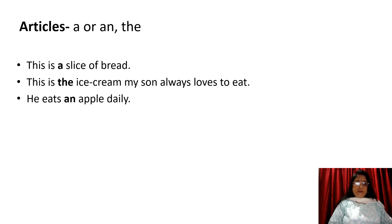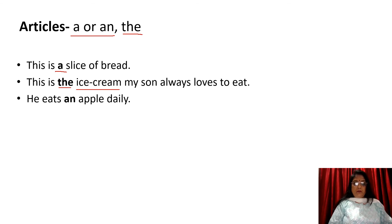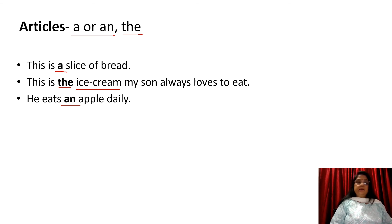Articles are also used as determinants. There are two types of articles: definite articles — 'the' — and indefinite articles — 'a' or 'an'. For example: 'This is a slice of bread' — 'a' refers to one slice. 'This is the ice cream my son always loves to eat' — 'the' refers to some specific ice cream. 'He eats an apple daily' — 'an' is used for vowel sounds. So articles are also used as determinants.